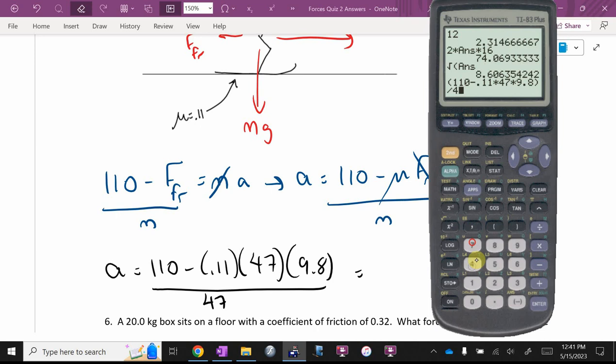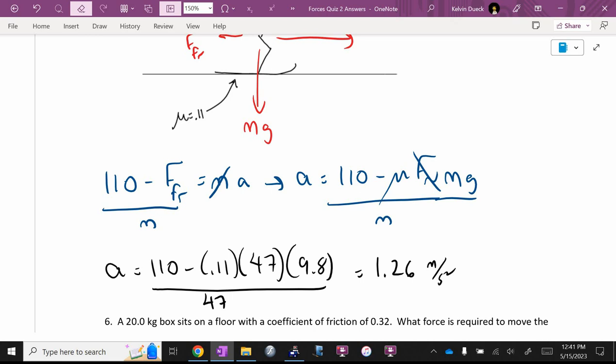Did you all get 1.26? See people nodding? And that's an acceleration, so meters per second squared. How many marks was this worth? Three. Okay. I'd probably go something like this. One mark if I saw that. One mark for that. Half mark for the numbers. And half mark for the answer.